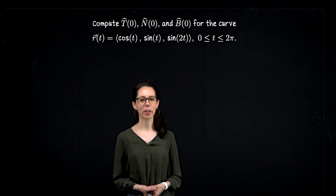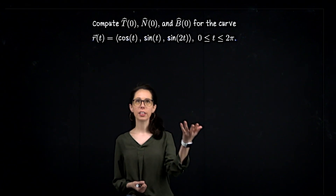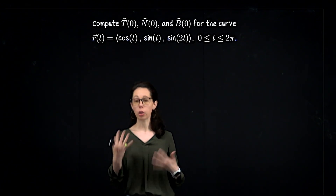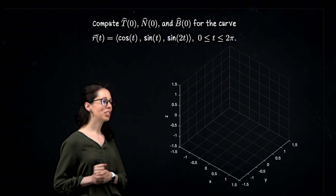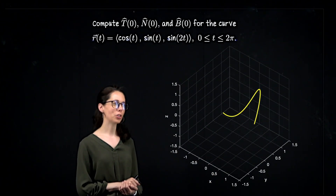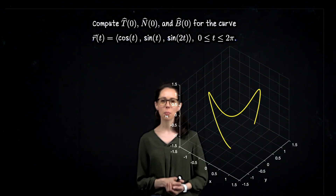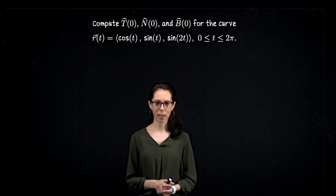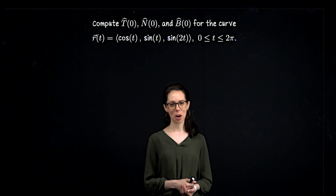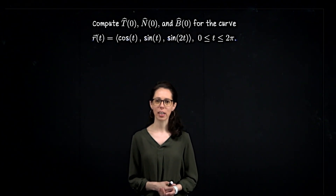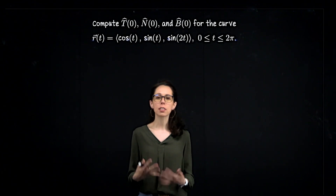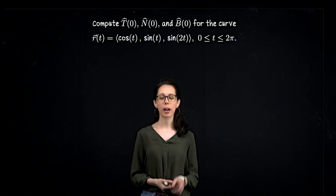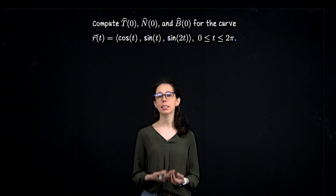A couple of remarks before we start with our computations. These three coordinate functions are all periodic, so this curve will close up. These vectors T, N, and B are what we call the Frenet frame vectors. We are not interested in finding expressions for these three vectors as functions of time in their own right — we are only interested in what they are at one particular moment in time, that is t equals 0.